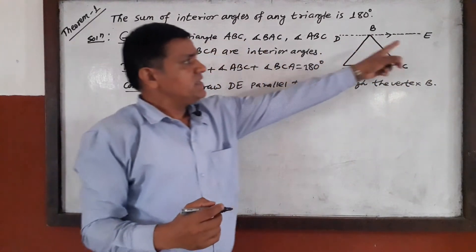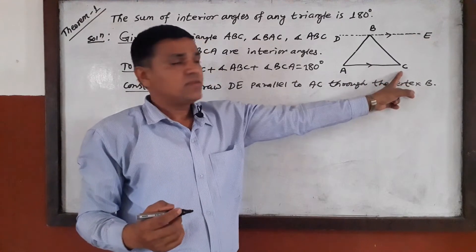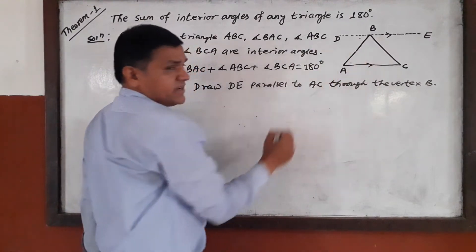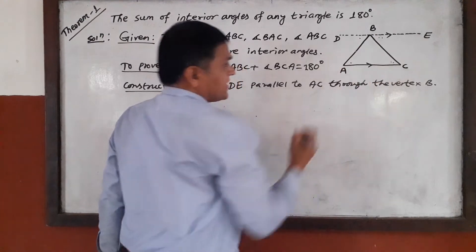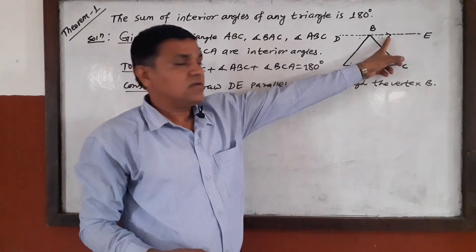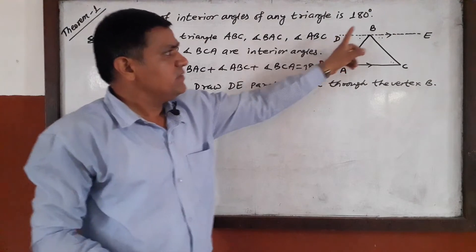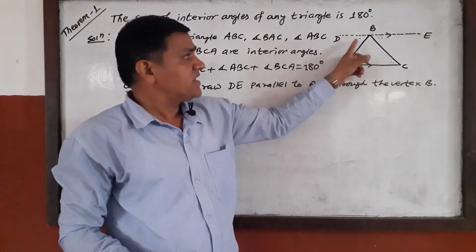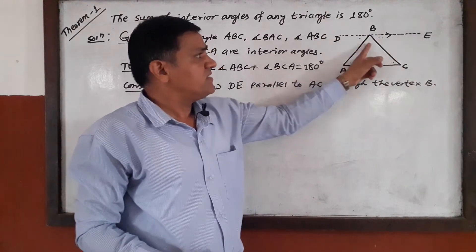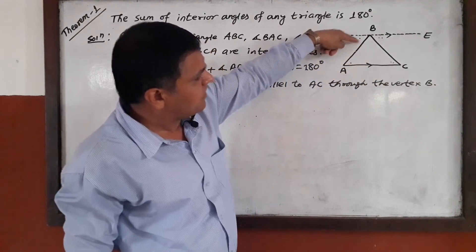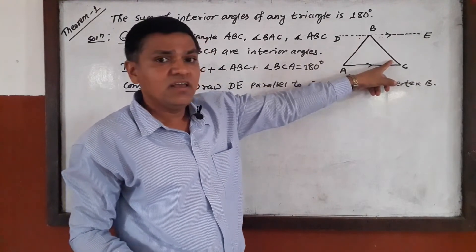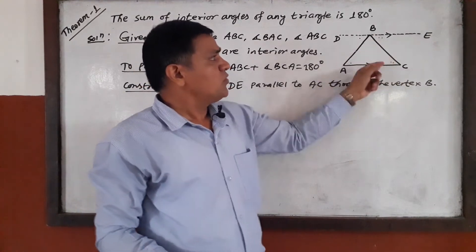If we draw DE parallel to AC through vertex B, then we see that these two angles are alternate angles, and these two angles are also alternate angles. These pairs of alternate angles are equal, being the two lines parallel. You can see DBE is a straight angle. The sum of all three angles in a straight angle is 180 degrees. We can replace the alternate equal angles and get the sum of the three interior angles equal to 180 degrees. Let us prove this in the same way.